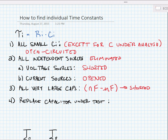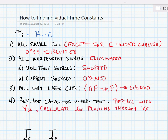Next, we're going to replace the capacitor that's under test, the one that we're analyzing the resistance for, with a voltage source. Our voltage source is going to be V sub X, and we're going to calculate the current I sub X flowing through V sub X. In this way, we're going to find R sub I is equal to V sub X over I sub X.